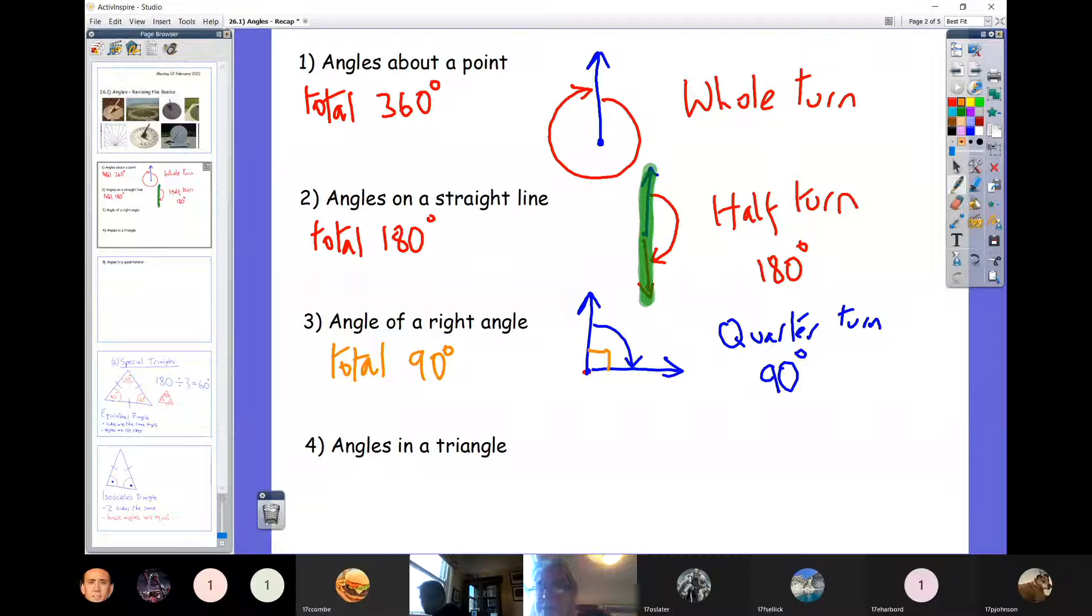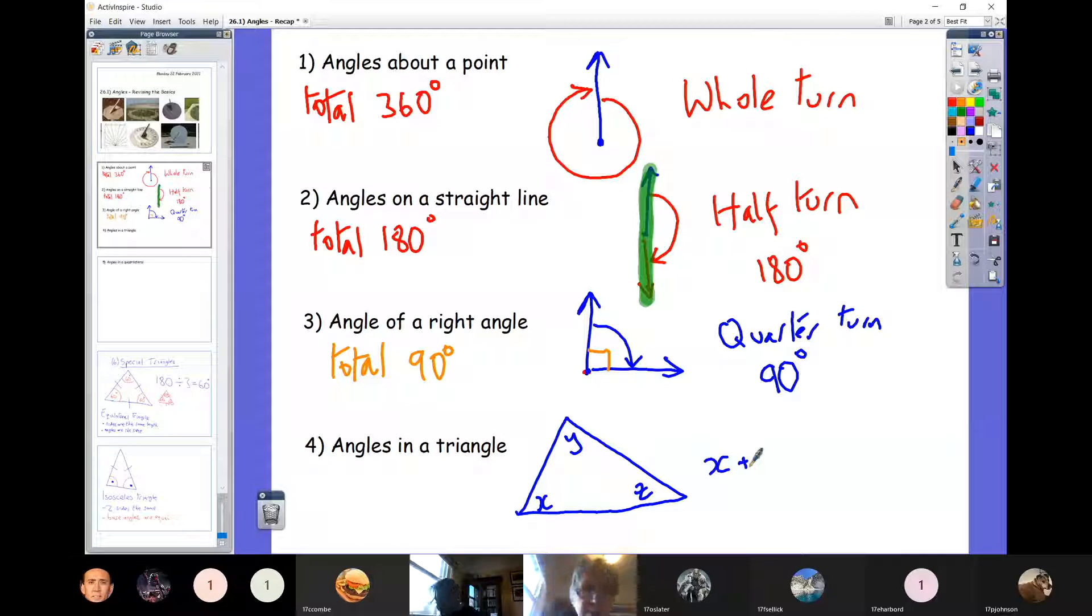Now, another one we need to know is that the angles inside any triangle, if we call that angle X, we call that angle Y and we call that angle Z, we know that the three of them, when you add them together, always equal 180 degrees. So angles in a triangle total 180 degrees.